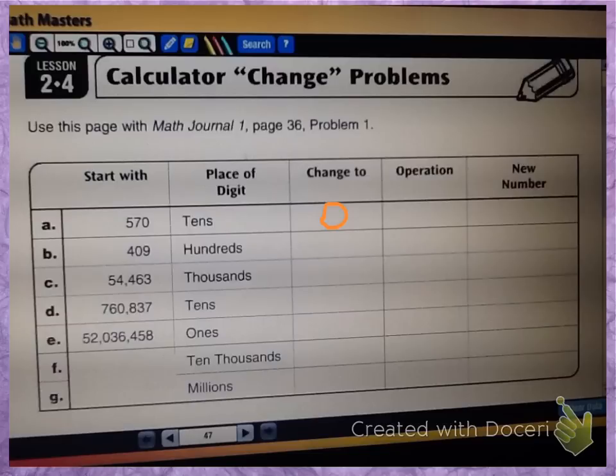if we look at letter A, we're starting with 570, and we're going to focus on the place value tens for this problem. And what I want you to think about is how would we change the tens digit to a zero. So I've got a change to column. I've got zero placed there. So would I add or would I subtract?